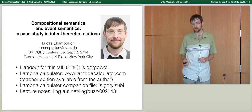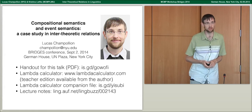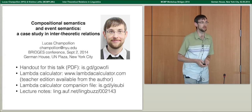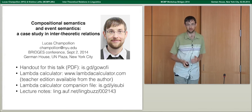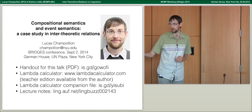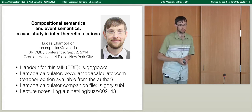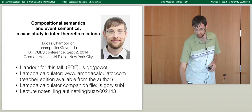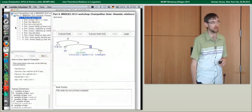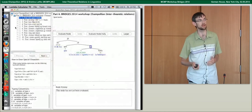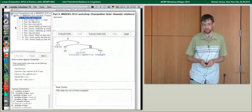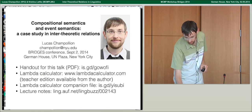The handout URL is is.gd/g-o-w-o-f-i. I'll also be using a software application called the Lambda Calculator, which is available in two editions: a student edition and a teacher edition. The student edition is available at lambdacalculator.com. The teacher edition is available to anyone with teaching credentials. I'll be using this to show some examples of derivations within Montague semantics as we go along.